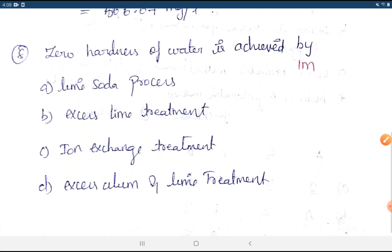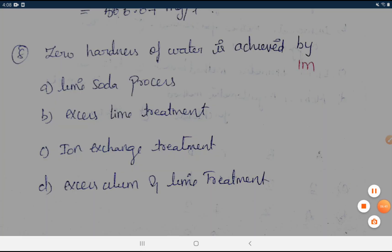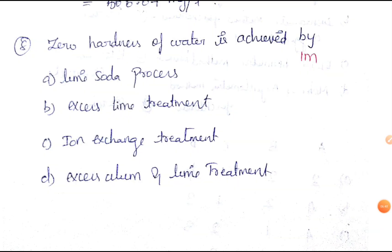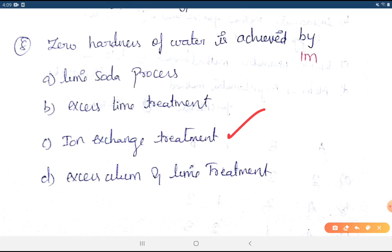Question 8: Zero hardness of water is achieved by which method? Options are: lime soda process, excess lime treatment, ion exchange treatment, or excess aluminum treatment. The answer is the ion exchange process, which achieves zero hardness.